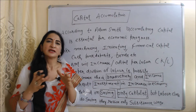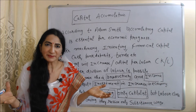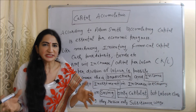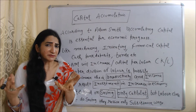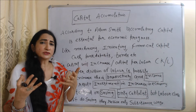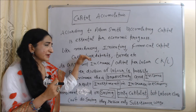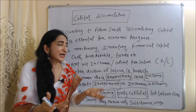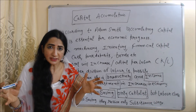Capital accumulation means accumulating more and more capital. According to Adam Smith, capital accumulation is essential for economic growth. It includes physical capital like machines and inventory, as well as financial capital such as cash, bank deposits, bonds, etc. If capital accumulation increases, then capital per labor — the capital-labor ratio — will also increase.